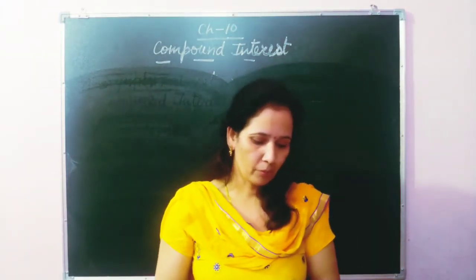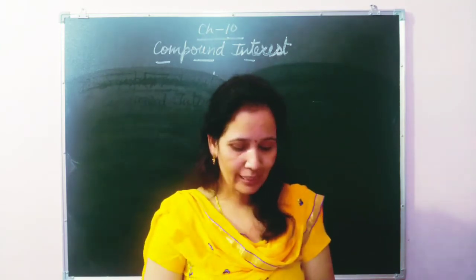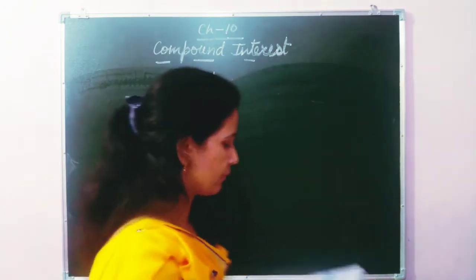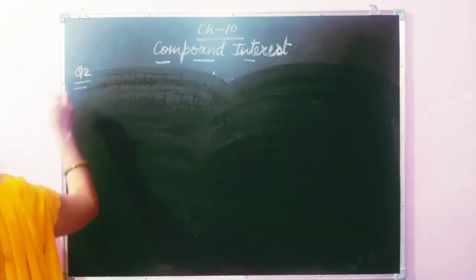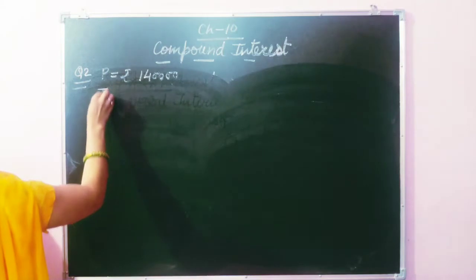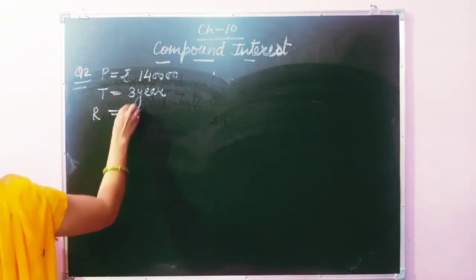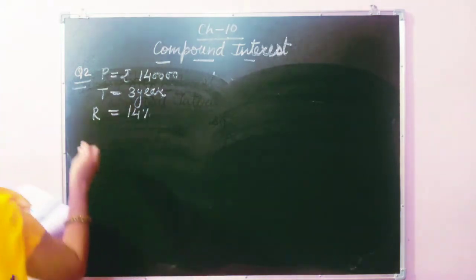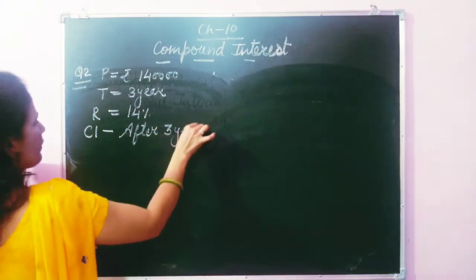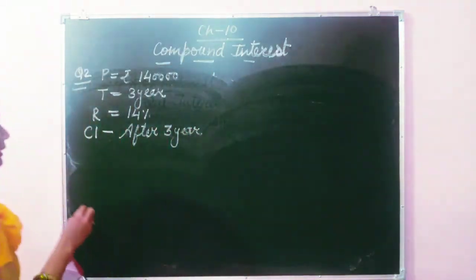Question 2: Mr. Nair deposits ₹1,40,000 in a chit fund company for 3 years. The rate of interest is 14% compounded annually. How much interest will Mr. Nair receive at the end of 3 years? Keywords: Principal = ₹1,40,000, Time = 3 years, Rate = 14%. We have to find the compound interest after 3 years.